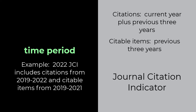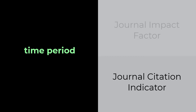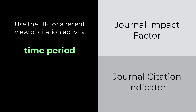For example, the 2022 JCI would include citations from 2019 to 2022, and citable items from 2019 to 2021. Use the JIF for a recent view of citation activity. It's not a mathematical average, but it provides an approximation of the number of citations to typical articles or reviews in the current JCR year. You can view JIF trend data to see the changes in this number over time.